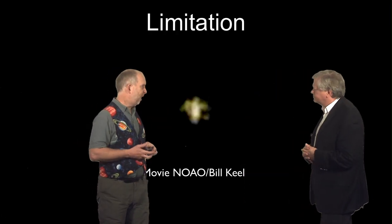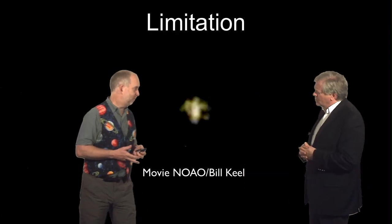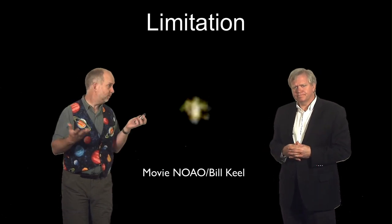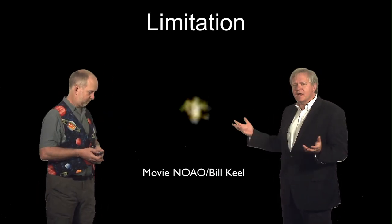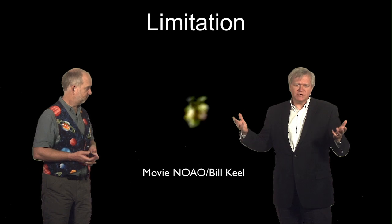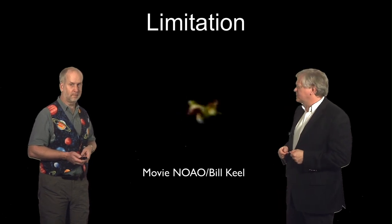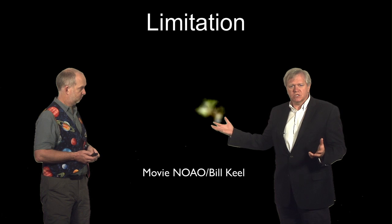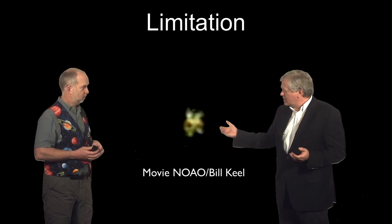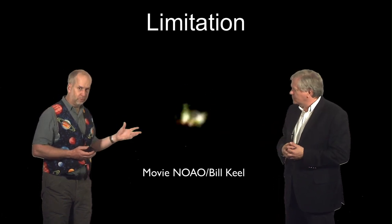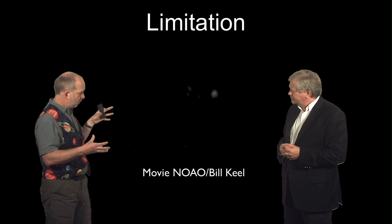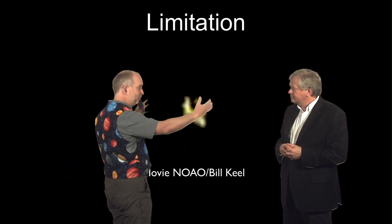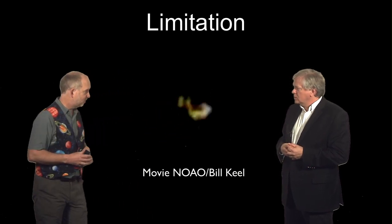So why can't we just find smaller planets with transits? In principle, we could look for really small dips and see really small planets. The problem we have, once again, is our atmosphere. This is a movie of what a star looks like going through the atmosphere — we've seen this before. It moves things around from pixel to pixel, so that's why we defocus the telescope to average over that.